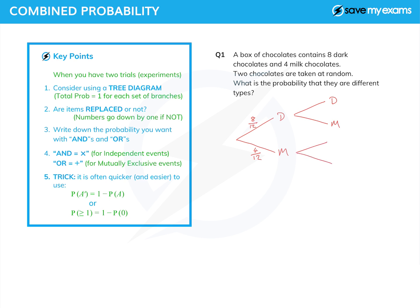And then we need to put a second set of branches on after each choice here. So if it's dark first, it can either be dark or milk second. And if it's milk first, it can still also be dark or milk second. And now because we're without replacement, we need to be careful with the probabilities. So how many dark chocolates are left if we've already taken a dark chocolate out? Well, the answer to that is seven. But how many chocolates are left? That's 11.